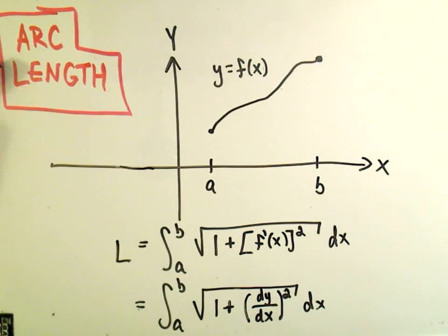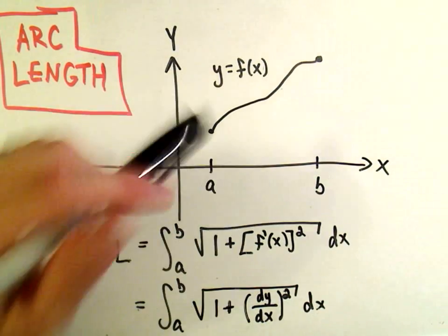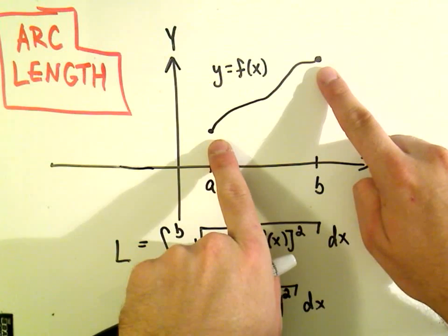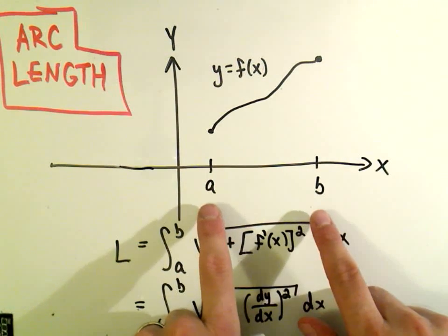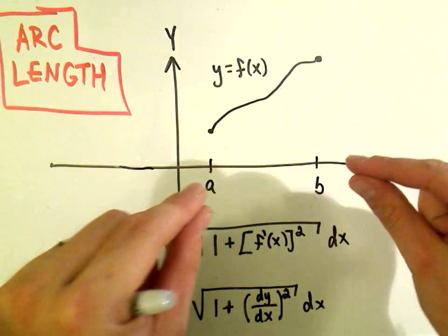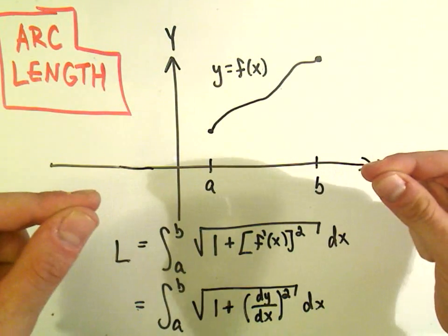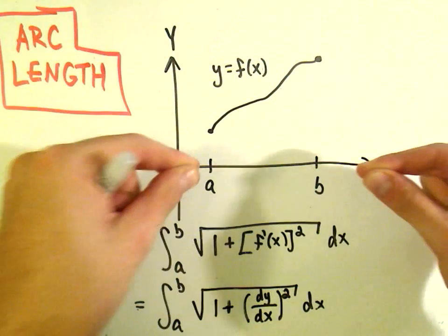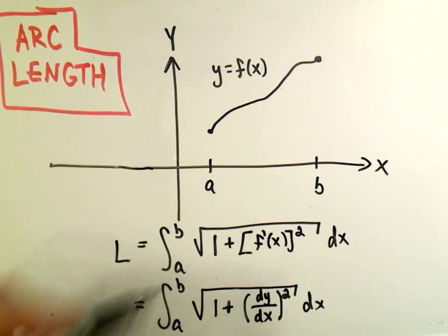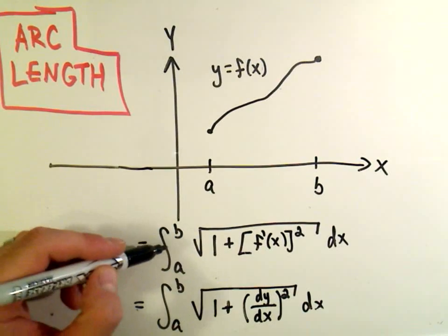In this video I want to talk about finding arc length of a function. When you're finding arc length, you've got some curve between the x-coordinates of a and b. Just imagine if you could pick this curve up, and if it was like a piece of string and pull it straight and measure it, how long it would be. That's all you're doing when you're finding arc length.